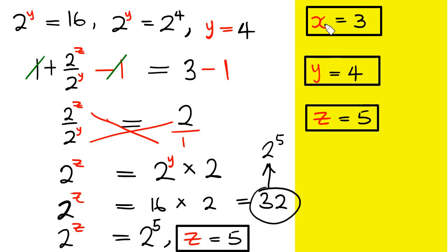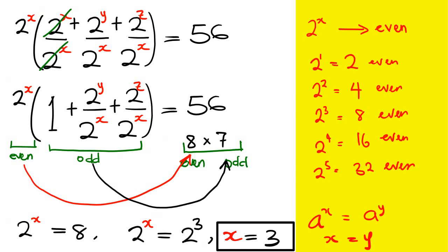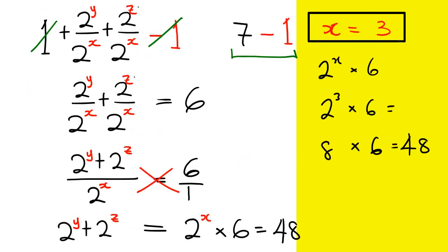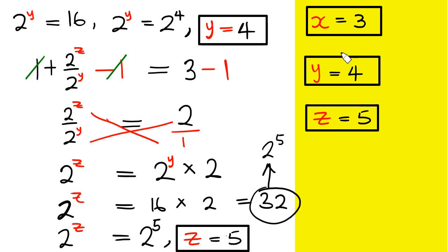Checking all along, we can see that x equals 3, y equals 4, and z equals 5. These are the final answers for the question: x equals 3, y equals 4, and z equals 5.